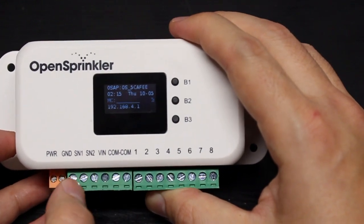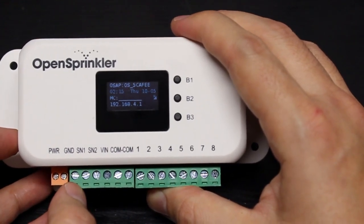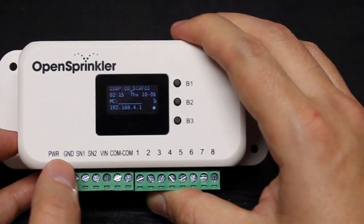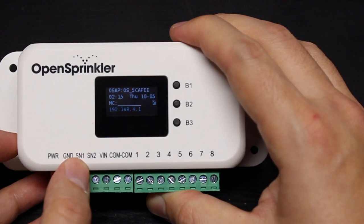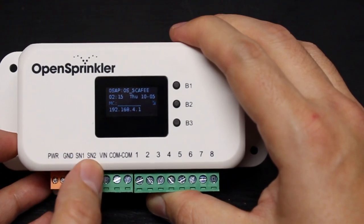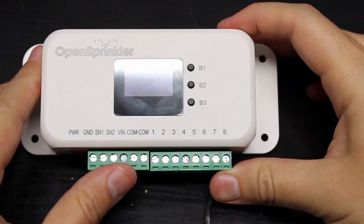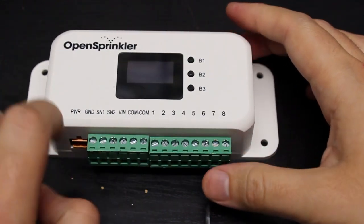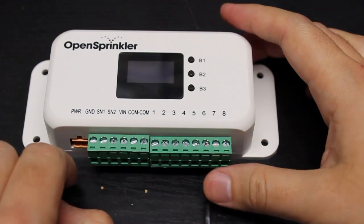So if you have a sensor like a rain sensor or soil moisture sensor or flow sensor, that should generally be plugged between ground and sensor 1 or ground and sensor 2. You should always do the wiring with the controller powered off. Please do not do any wiring while the controller is alive.